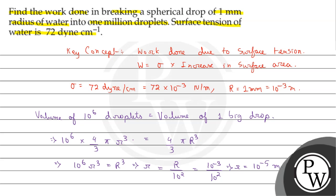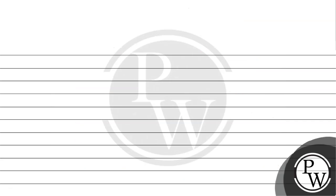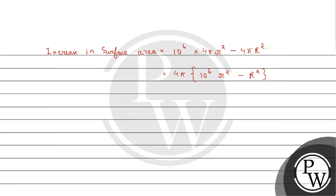Now we can find the increase in surface area. The increase in surface area equals 10 to the power 6 multiplied by 4 pi r squared minus 4 pi capital R squared. Taking 4 pi common: 4 pi multiplied by 10 to the power 6 times r squared minus capital R squared. Substituting values: 4 pi multiplied by 10 to the power 6 times 10 to the power minus 5 squared, minus 10 to the power minus 3 squared. Solving, the increase in surface area equals 1.24 multiplied by 10 to the power minus 3 meter squared.